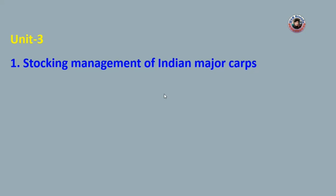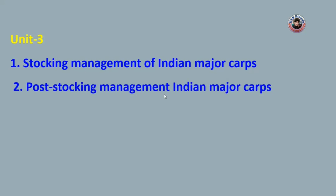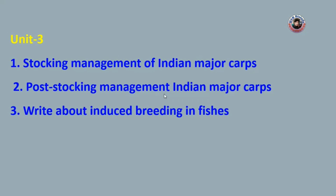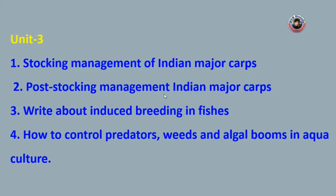In unit three, the first question is stocking management of Indian major carps. The second important question is post-stocking management of Indian major carps. The third question is: write about induced breeding in fishes. The fourth question is how to control predators, weeds, and algal blooms in aquaculture.